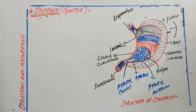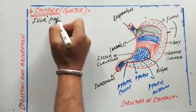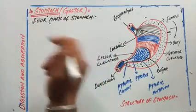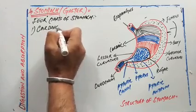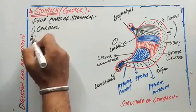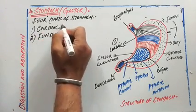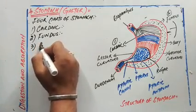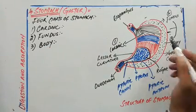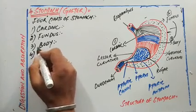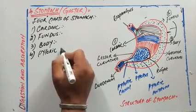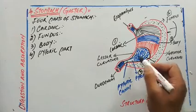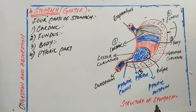There are four parts of the stomach. The first one is the cardiac part, the second is the fundus, the third is the body, and the fourth part is the pyloric part.